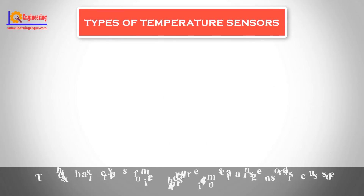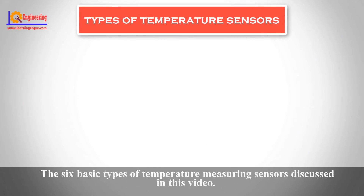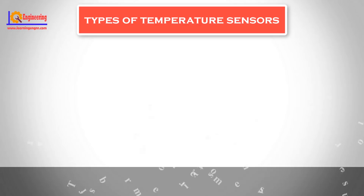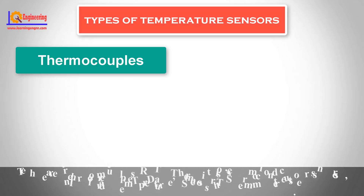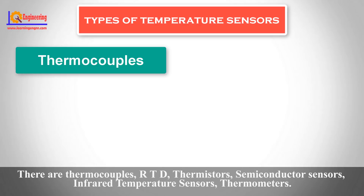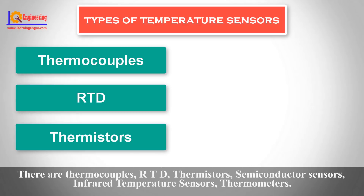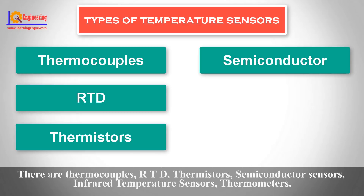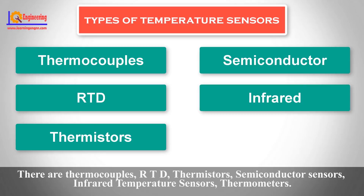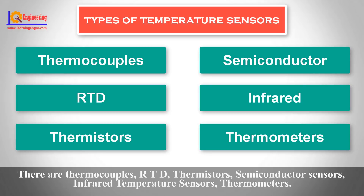The six basic types of temperature measuring sensors discussed in this video are thermocouples, RTD, thermistors, semiconductor sensors, infrared temperature sensors, and thermometers.